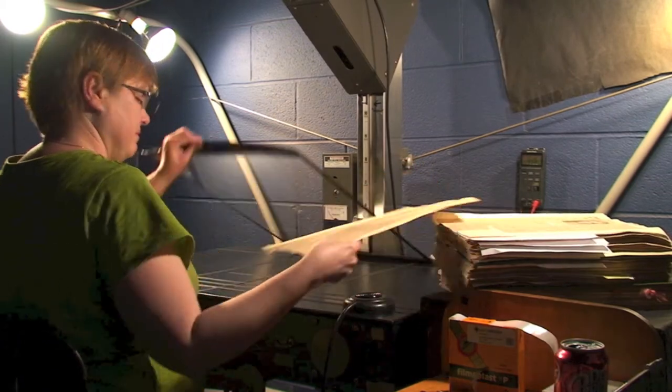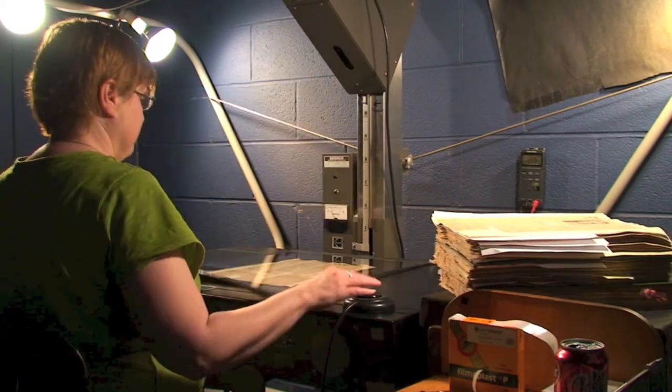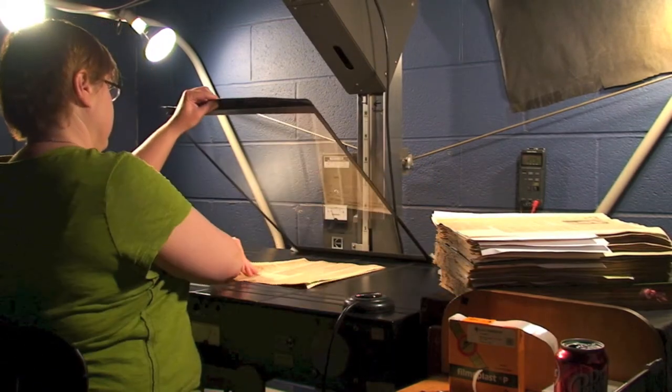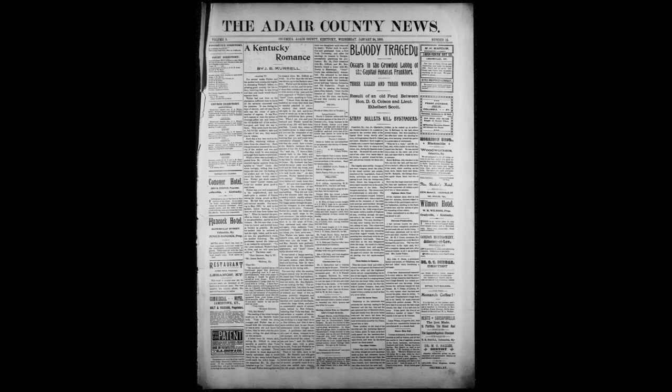Almost all preservation microfilm camera masters are silver, leaving diazo and vesicular as primarily duplication films. Silver film can be both negative and positive, and it can be used as a camera master, print master, or service copy.